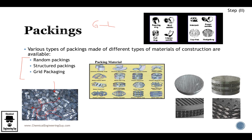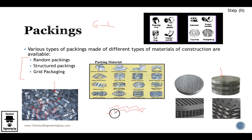Structured packing — this could be an example of structured packing. As you can see, it is structured by design. Even though it's by design, it still favors turbulence, or let's say chaotic movement, between the gas and the liquid.